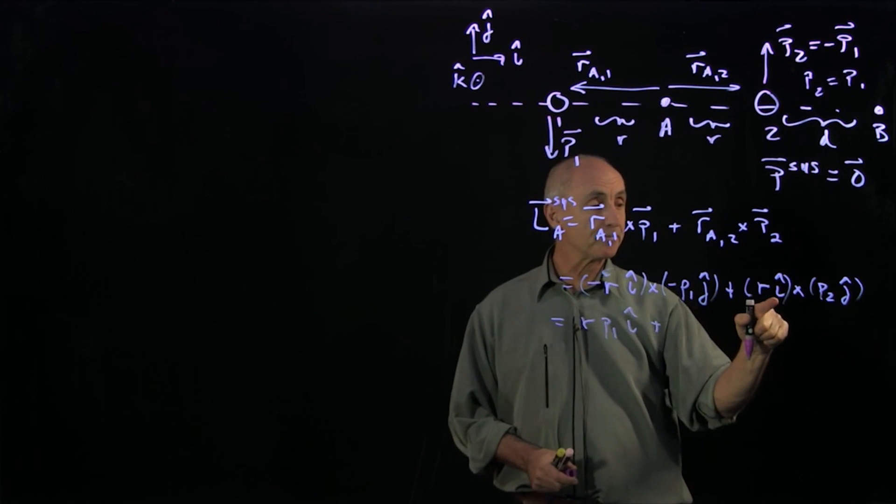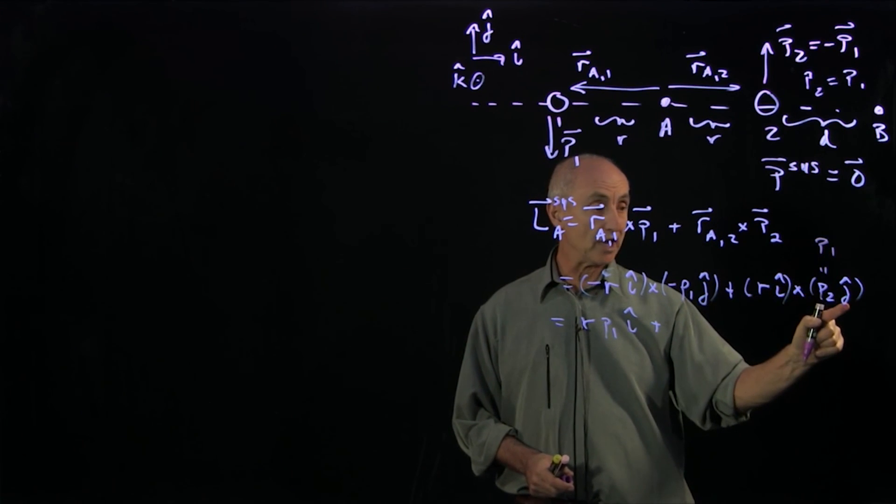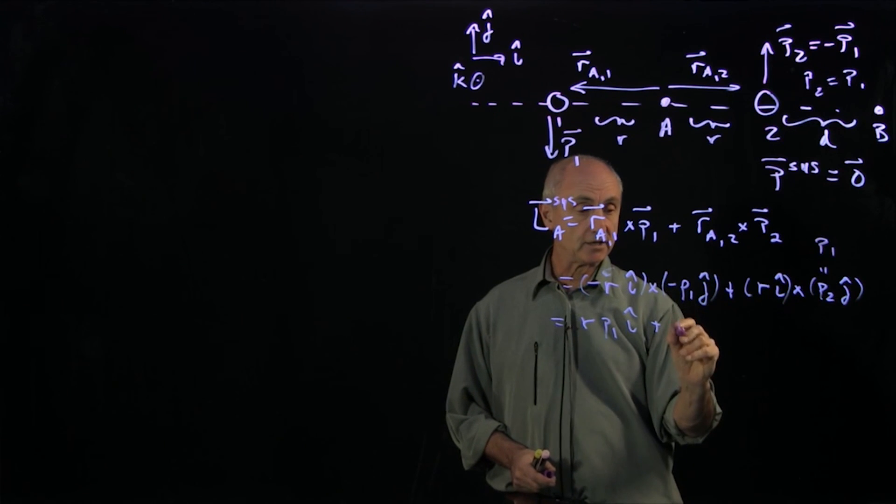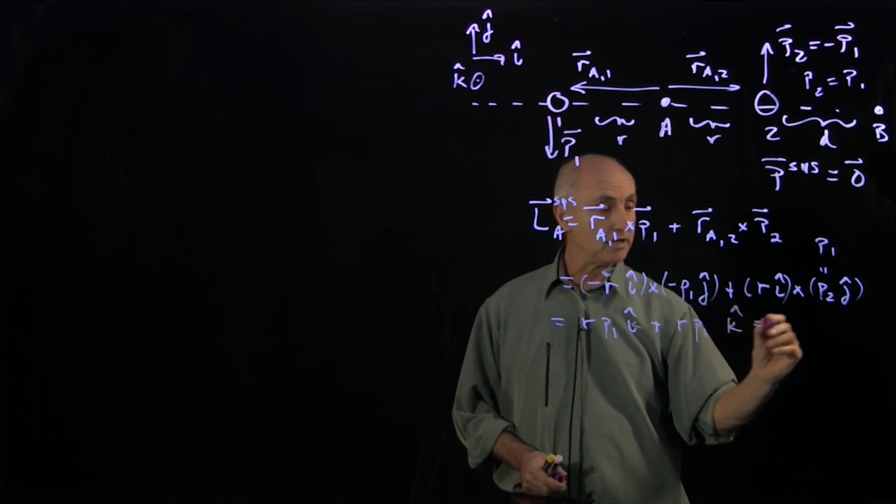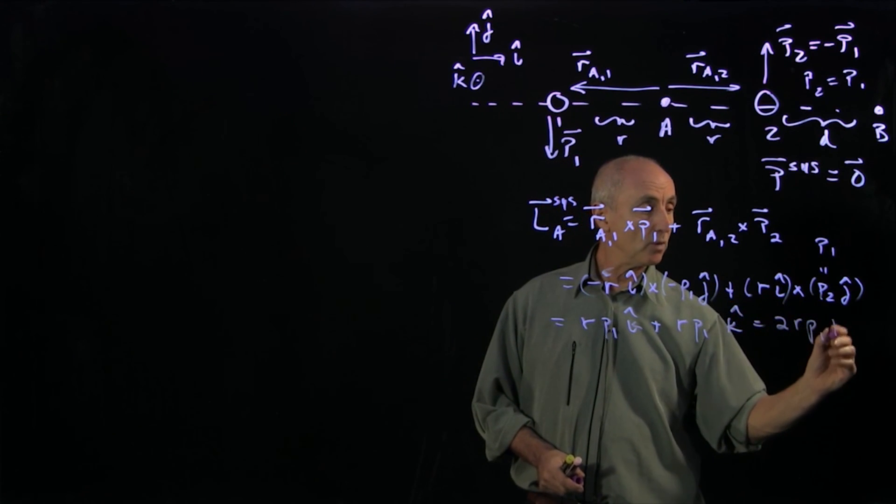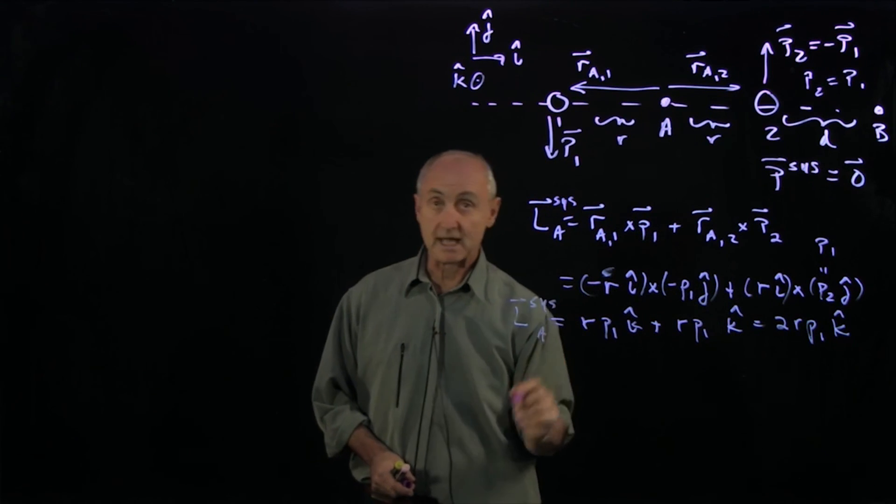And now over here, P2 is equal to P1. i hat cross j hat is k hat, and I get another R P1 k hat. And so I have 2R P1 k hat, and that's the angular momentum of the system about point A.